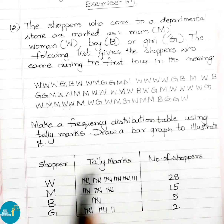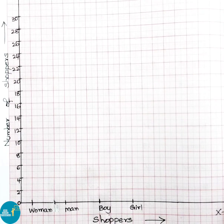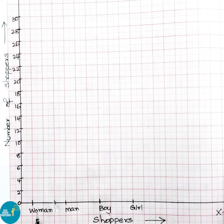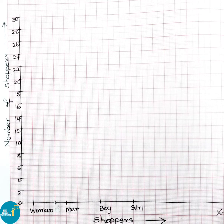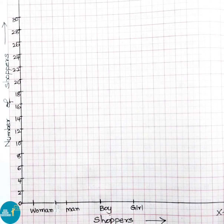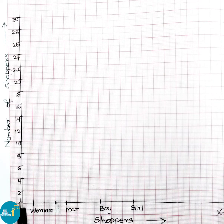Now using this table we have to draw the bar graph. On the x-axis we have taken woman, man, boy, girl — these are the shoppers' names. On the y-axis we have taken number of shoppers starting from 0 onwards.